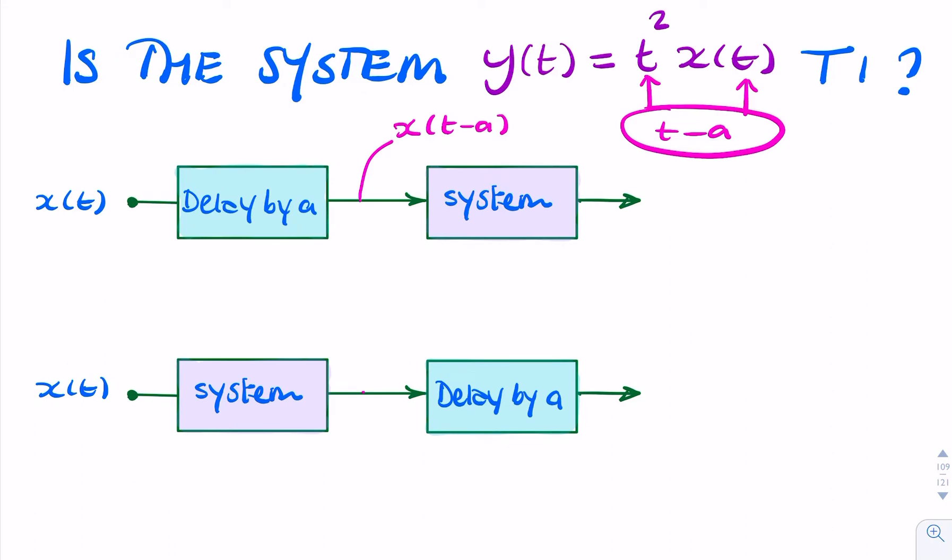So the output, instead of being t squared x of t, will be t minus a squared x of t minus a.